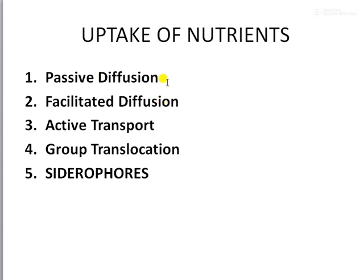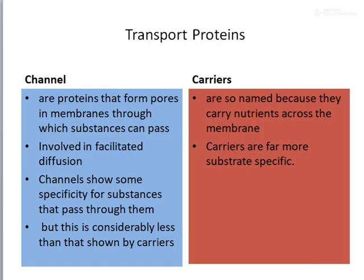In passive diffusion you do not require proteins to transport — the molecules move from higher to lower concentration down the concentration gradient. In facilitated diffusion, certain proteins are needed for the transport of molecules across the plasma membrane. These transport proteins can be divided into two different types: one is a channel protein and the second one is a carrier protein.